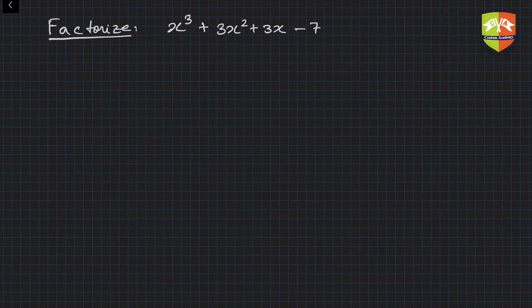So again we have been given this expression: x³ + 3x² + 3x - 7, and we have to factorize it. Now, if you have to approach this, what all do we know?